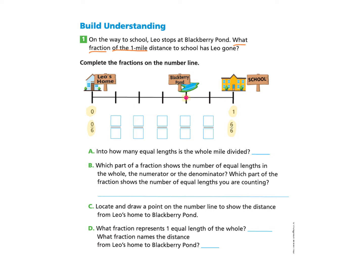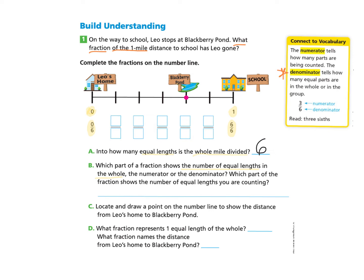There is a dot for where Leo stops at Blackberry Pond. Now let's look at Part A: into how many equal lengths is the whole mile divided? We can count how many stops there are: 1, 2, 3, 4, 5, 6. So there are 6 equal lengths. For Part B, which part of the fraction shows the number of equal lengths in the whole — the numerator or denominator? The denominator tells how many equal parts there are in the whole, so we answer denominator and place the 6 in the denominator's spot.